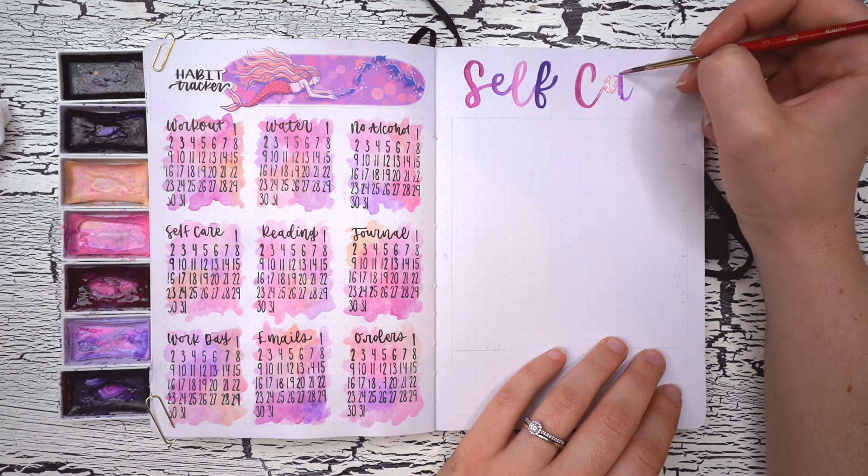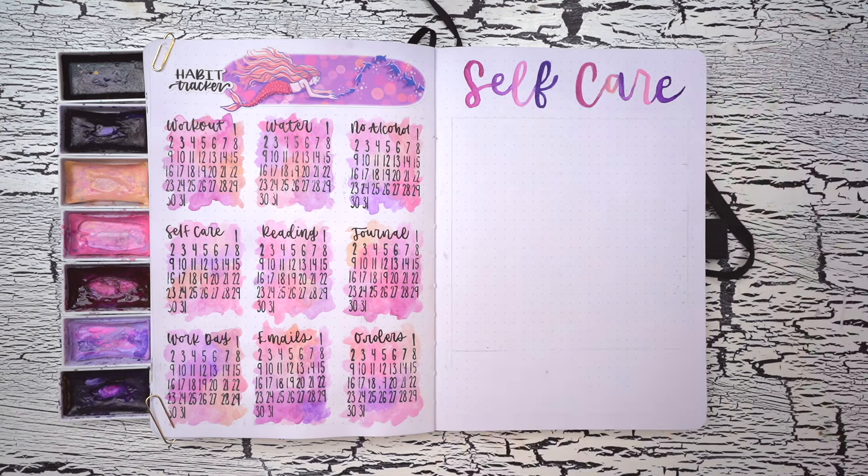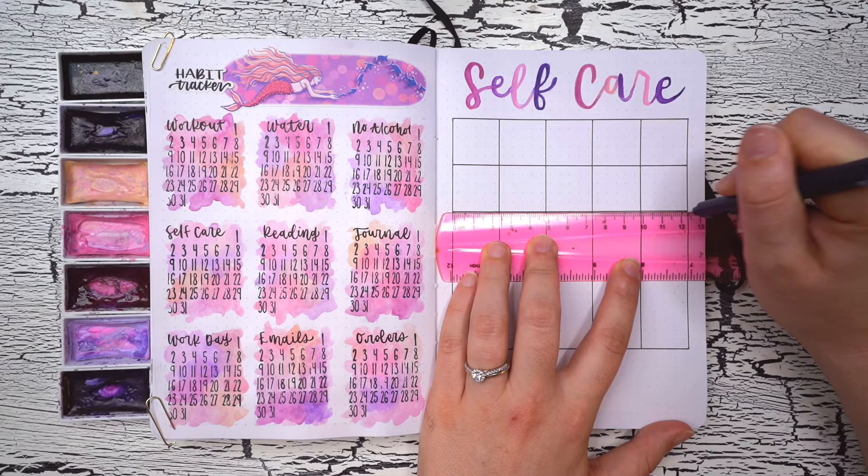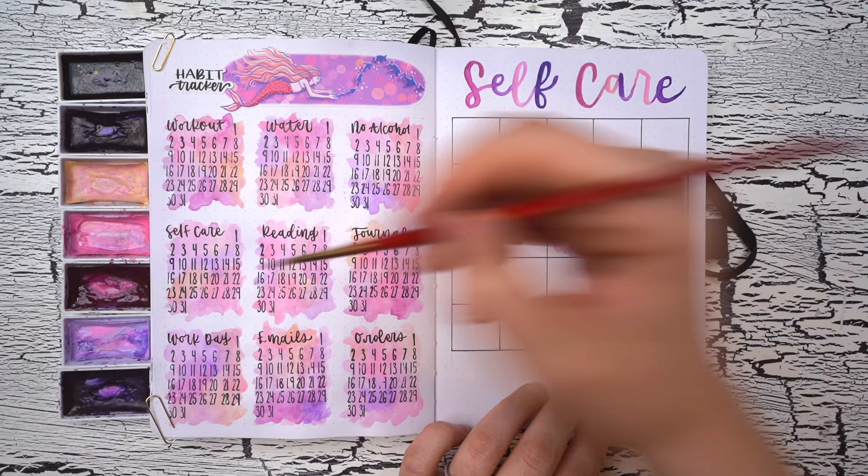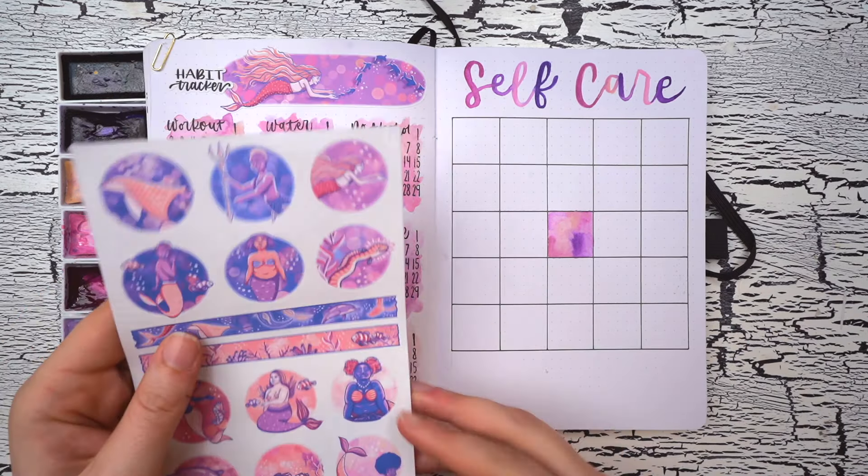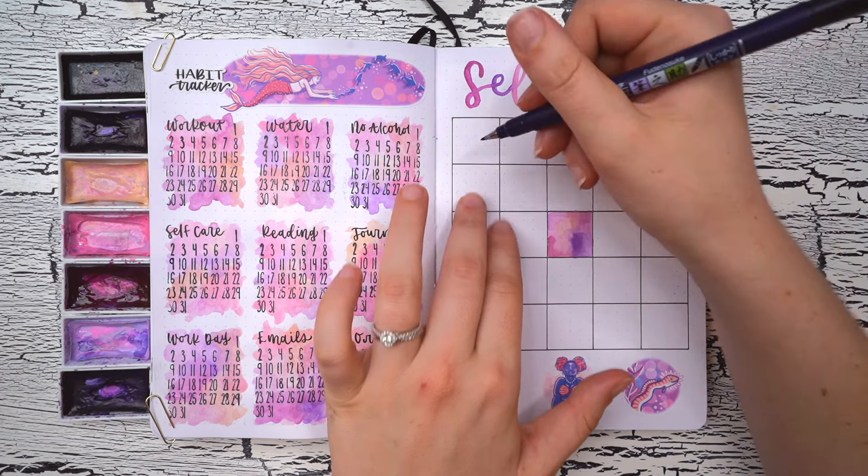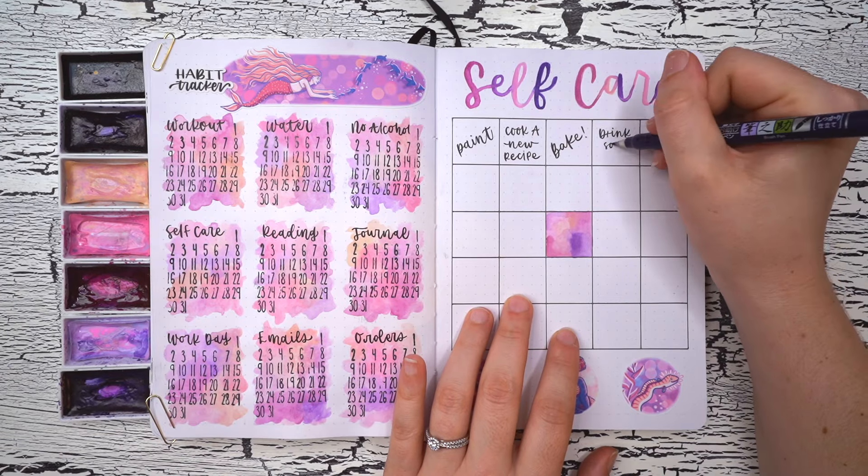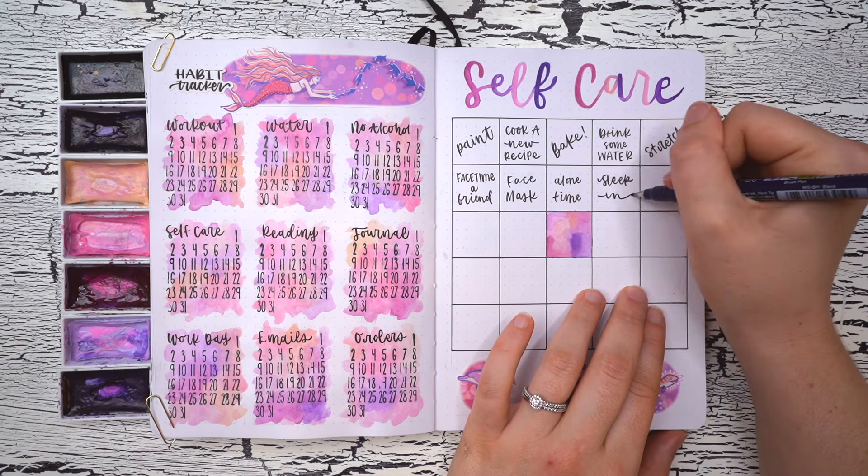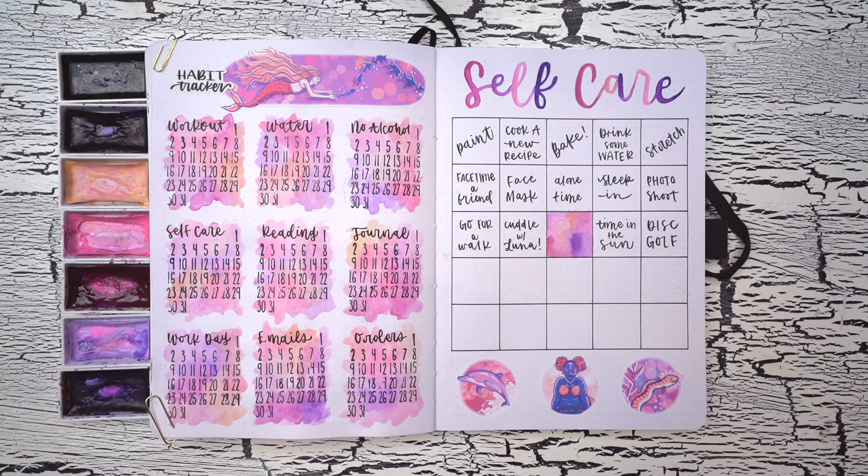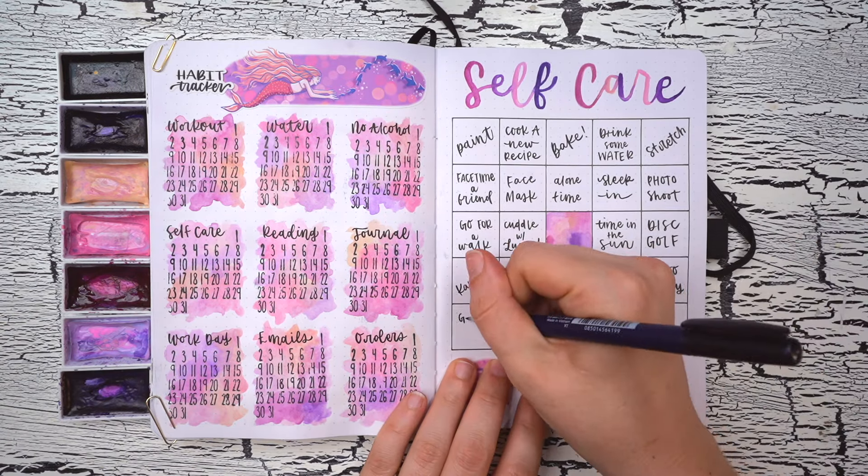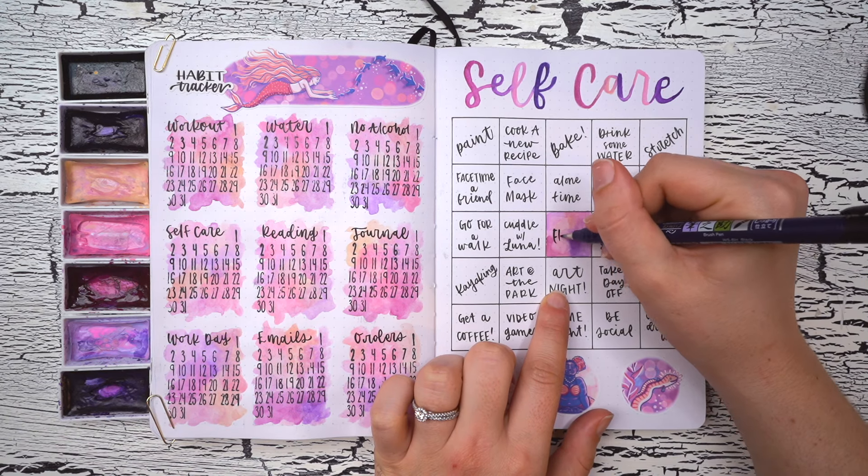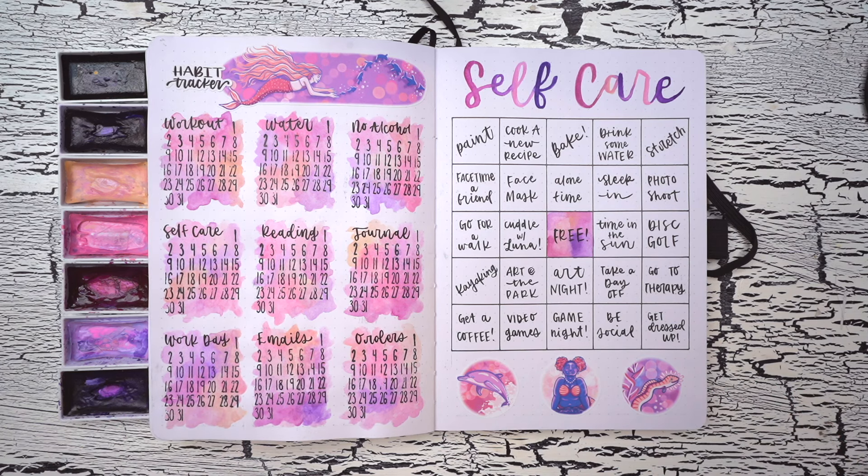On the right side of the spread, I'm going to create my self-care bingo tracker, which has been a really lovely new addition to my journaling since last November. Each square on my bingo card is five spaces wide by five spaces tall, and I'm going to fill these in with 24 different self-care items that I can cross off throughout the month. This page is a really great reminder throughout the month to just give myself these little self-care moments, and every time I get to color in a box, it's also a chance to celebrate that self-care. Some examples are cooking a new recipe, stretching, FaceTiming a friend, cuddling with my cat Luna, drinking some water, getting dressed up, and spending some time in the sun.